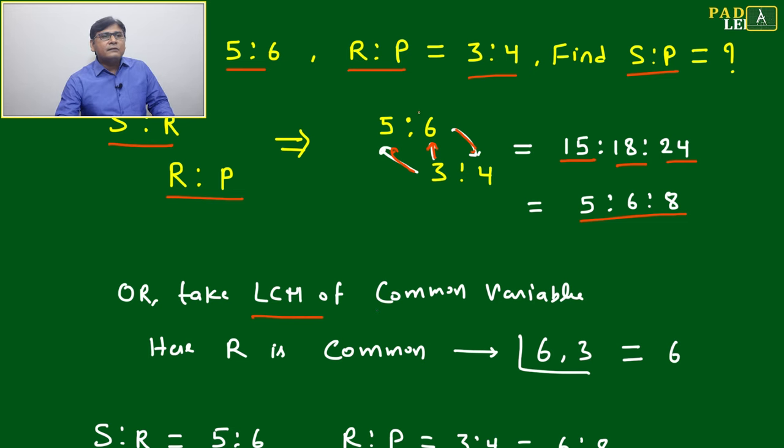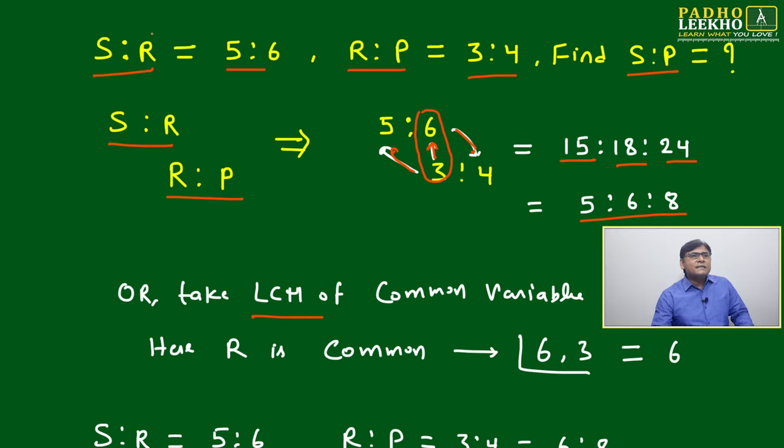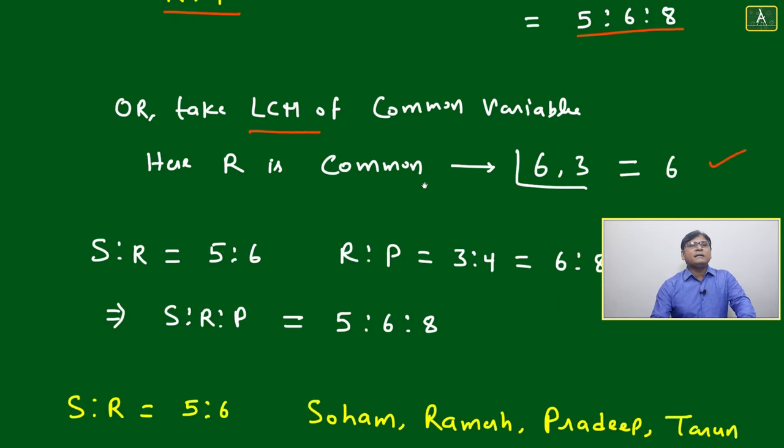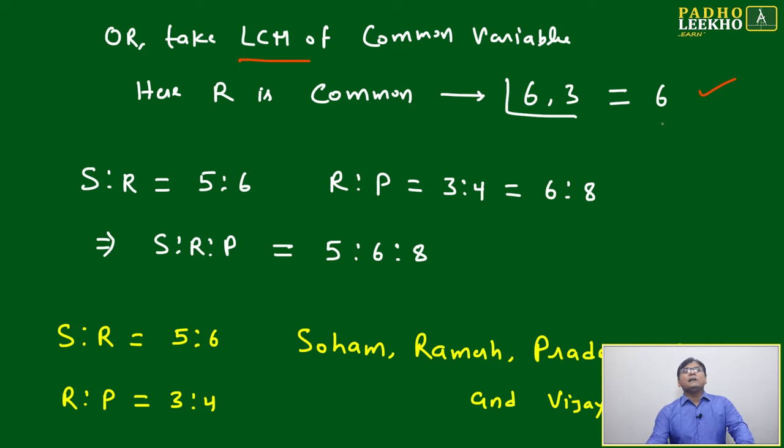LCM of the common variable - like 6 and 3. This is your common, Ramesh is here also and here also. Ramesh here is 6, here it is 3. Between 3 and 6, take the LCM which is 6. When we multiply we get 18 due to common factor 3, but here once we take the LCM you will get 6 directly.